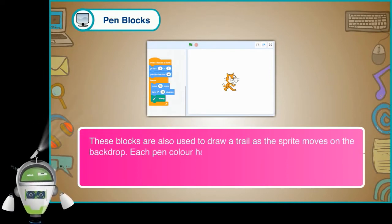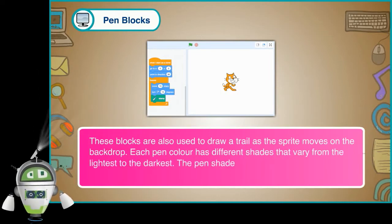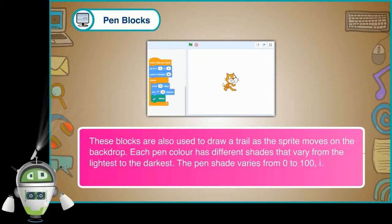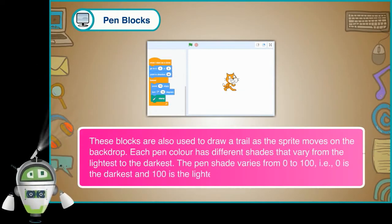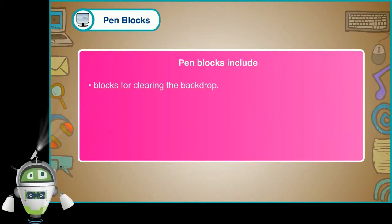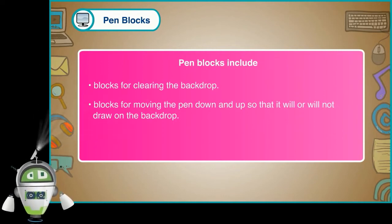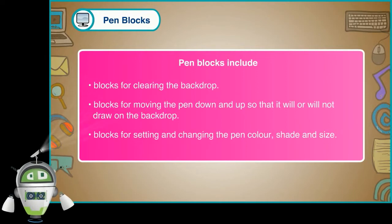Each pen color has different shades that vary from the lightest to the darkest. The pen shade varies from 0 to 100 — 0 is the darkest and 100 is the lightest shade. Pen blocks include blocks for clearing the backdrop, blocks for moving the pen down and up so that it will or will not draw on the backdrop, and blocks for setting and changing the pen color, shade and size.